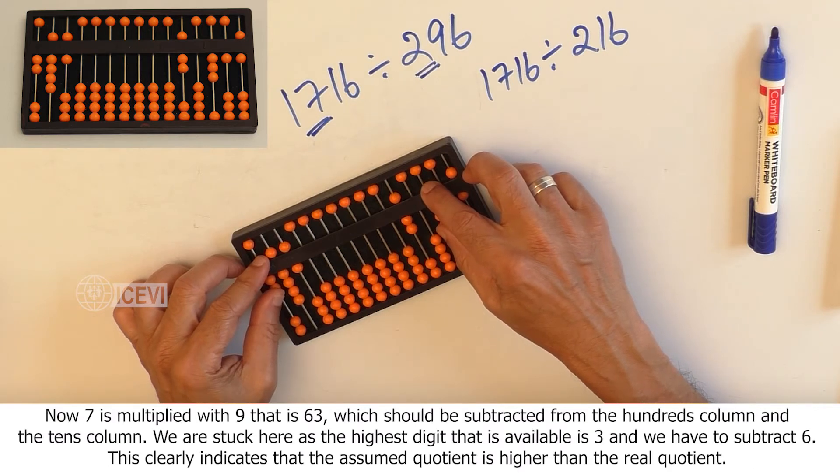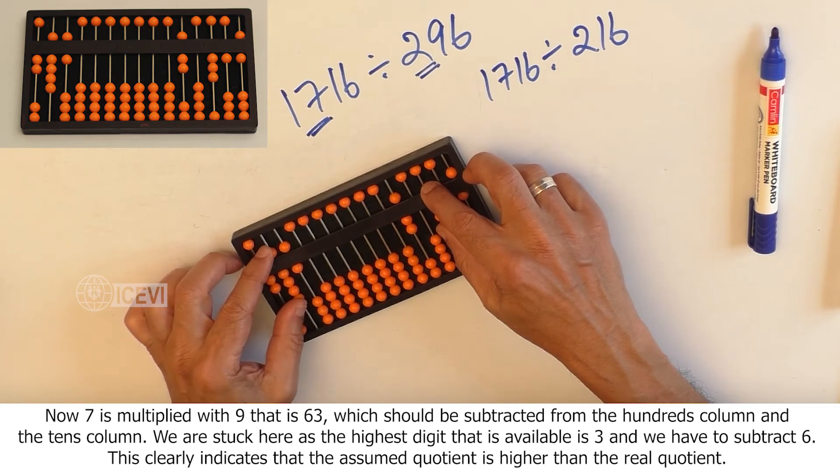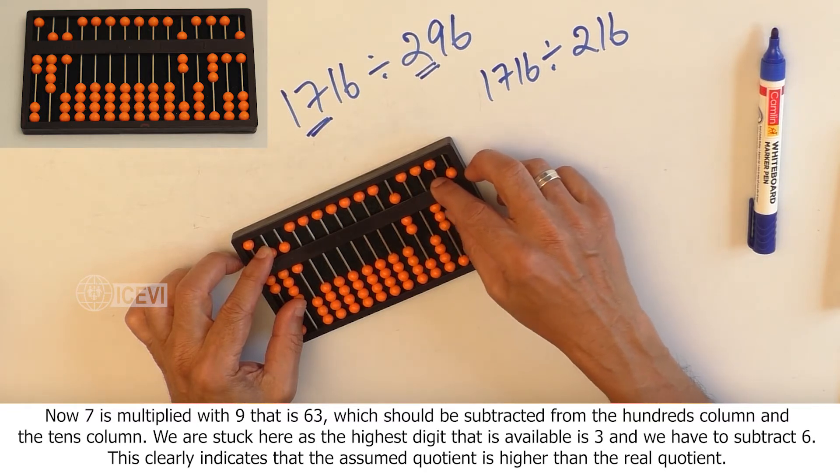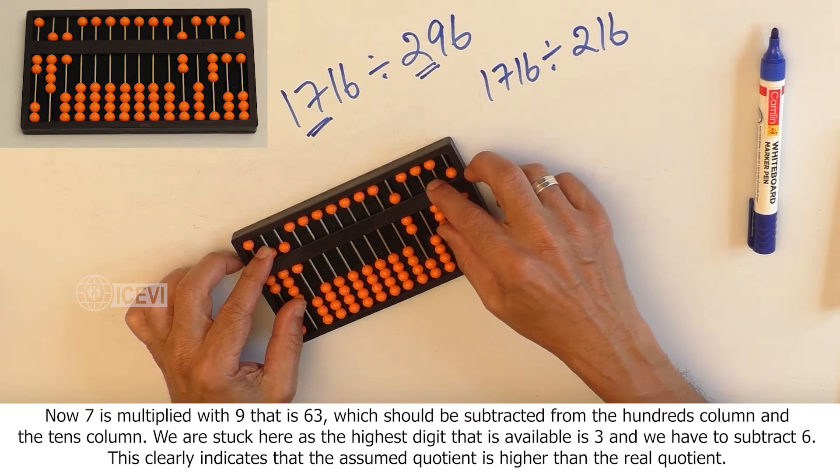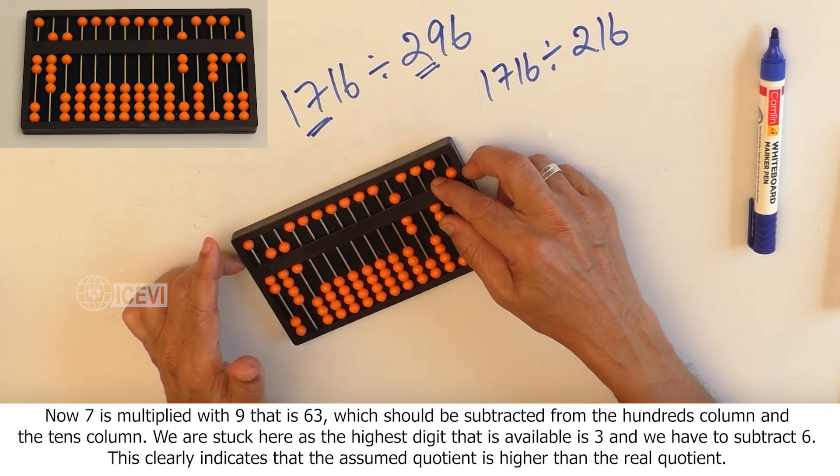Now, 7 is multiplied with 9, that is 63, which should be subtracted from the hundreds column and the tens column. We are stuck here, as the highest digit that is available is 3 and we have to subtract 6.